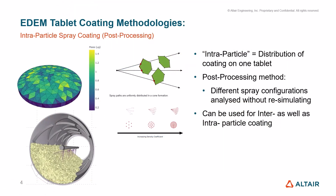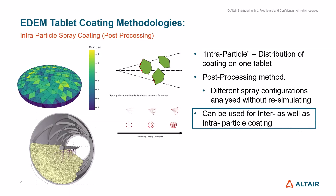The ray tracing tablet coating method gives us a distribution of coating across one tablet. The intra-particle spray coating method is a post-processing method only, which allows you to simulate different configurations without re-simulating. It can be used for inter-tablet coating as well as intra-tablet coating, so it allows you to look at the distribution of coating across all the tablets in the simulation as well as the distribution across the surface of one tablet.